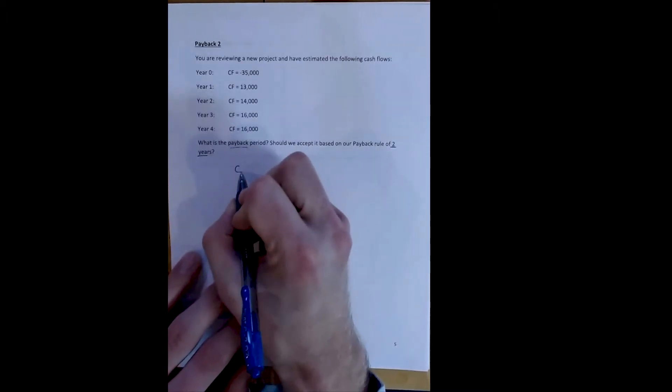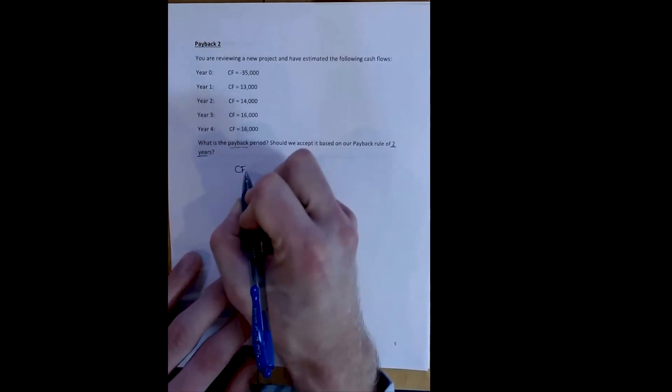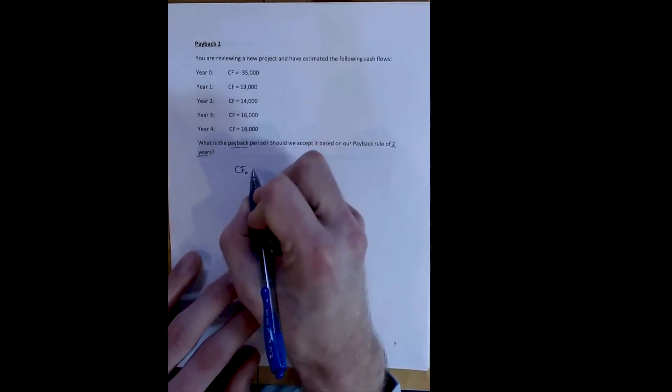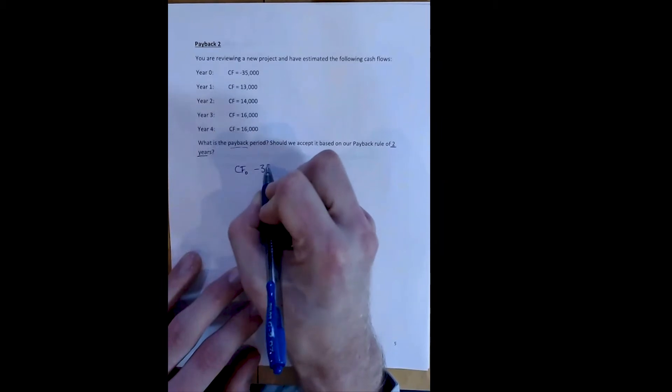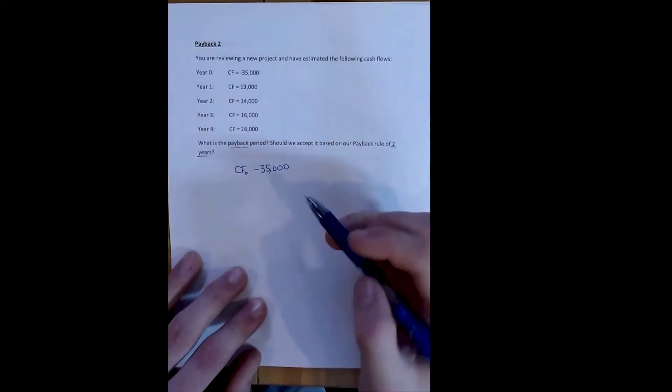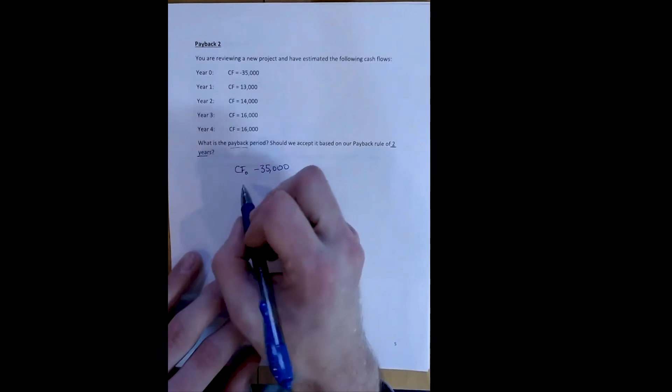So we start off the same way we did before. We make our horizontal or vertical timeline. We start off with the initial cost, the initial cash flow, $35,000. And then we add each year's cash flow one by one.